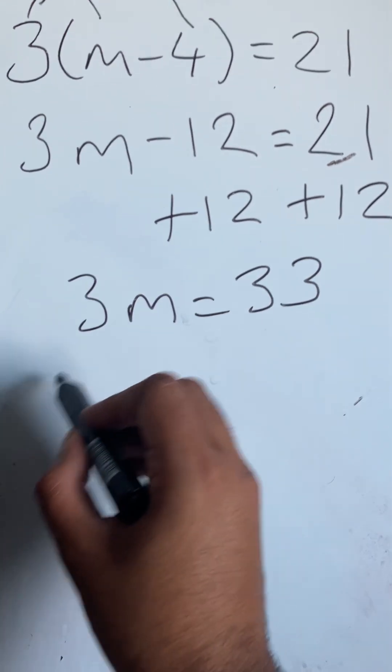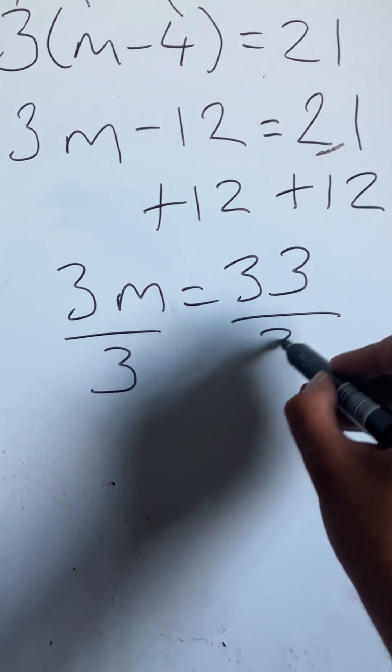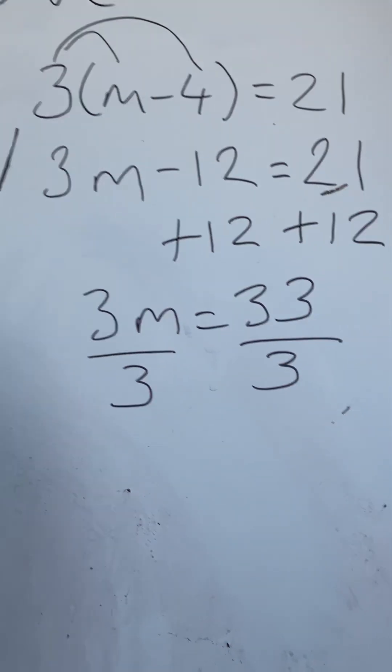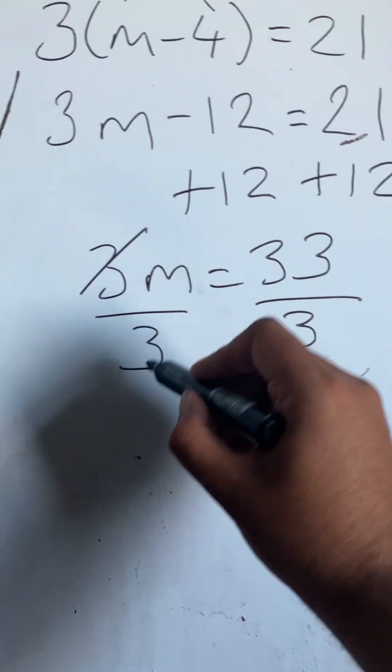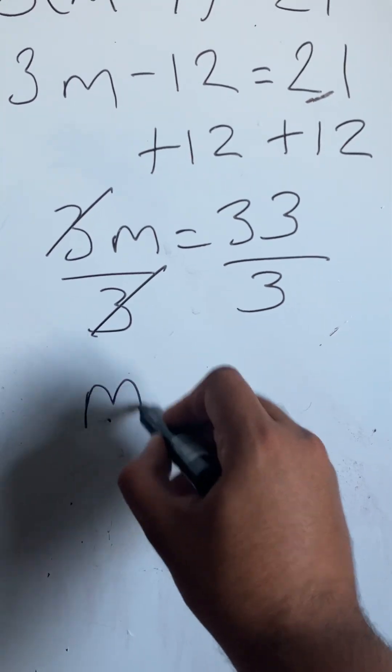I'm now going to divide both sides through by 3 because 3m means 3 times m or m times 3. So the opposite is to divide both sides by 3. That's going to cancel. So I'm going to have just m on this side.